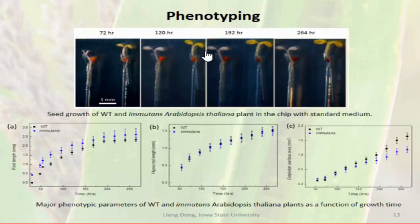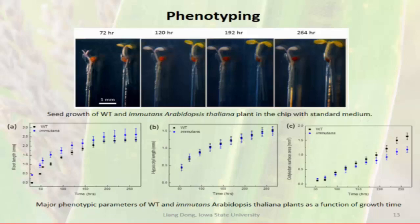We also did phenotyping on the device—basically putting different strains of seed into the device. These seeds are mutants, so they grow differently even under the same conditions compared to the wild type. You can see that the mutant Arabidopsis and the wild type have different phenotypes even though they grow under the same conditions.